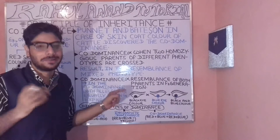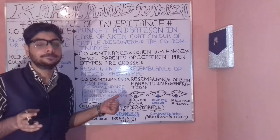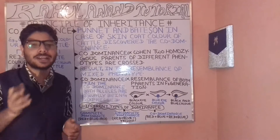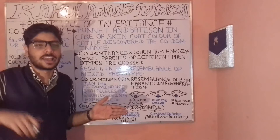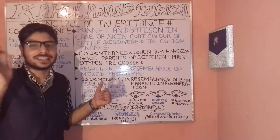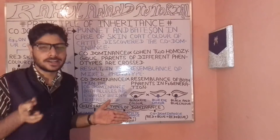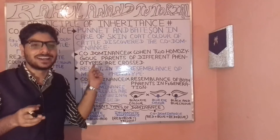When we talk about co-dominancy, what happens is that the offspring will show resemblance to both parent characteristics. In the F1 generation, we see a mixed phenotype — resemblance to both parents. Let's understand this with an equation.